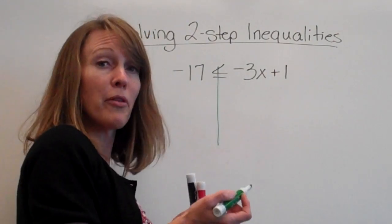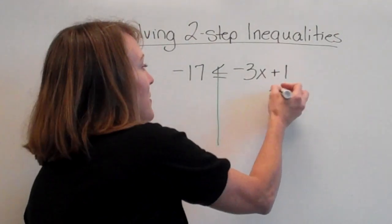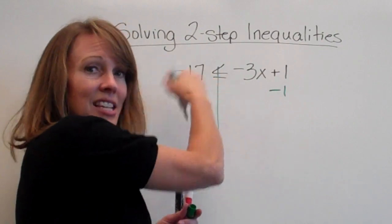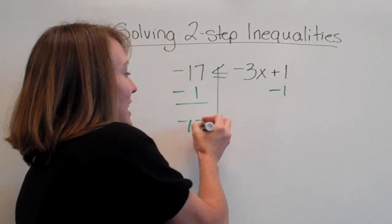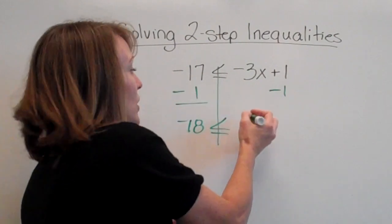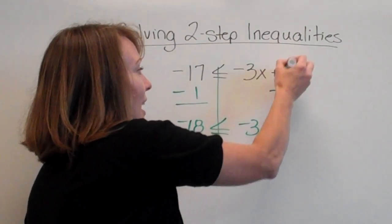So we're going to get rid of the loner number first by subtracting 1. And since these are the same signs, we're going to add them together. We'll get negative 18 is less than or equal to negative 3x.